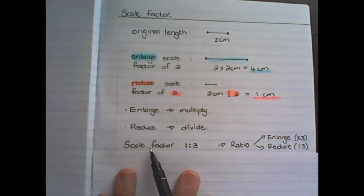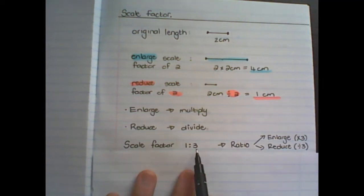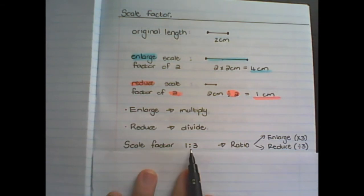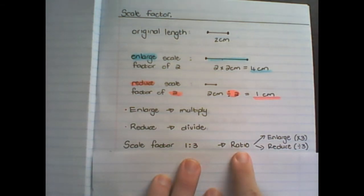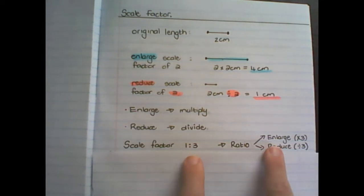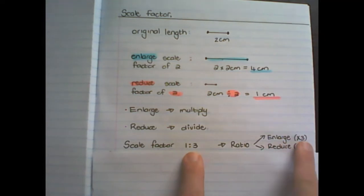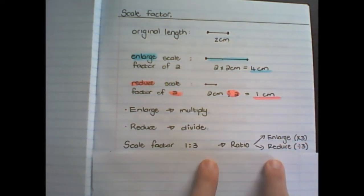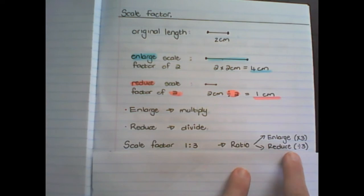The scale factor can also be presented in the form of a ratio. So the scale factor in this case would be one to three. So I can enlarge it by multiplying the original length by three, or I can reduce it by dividing the original length by three.